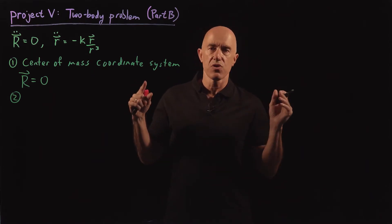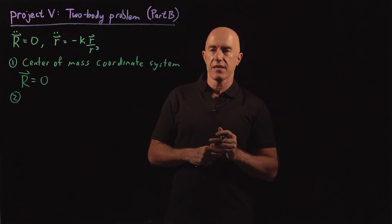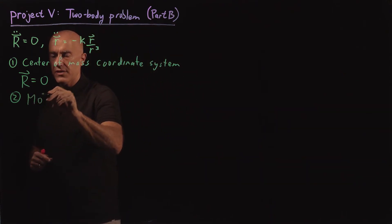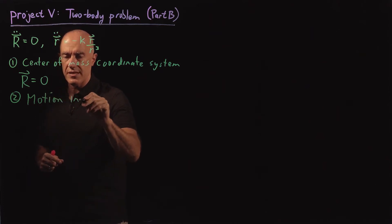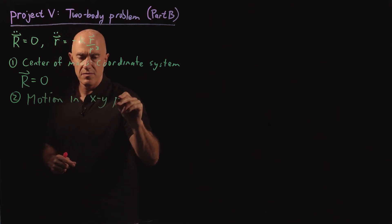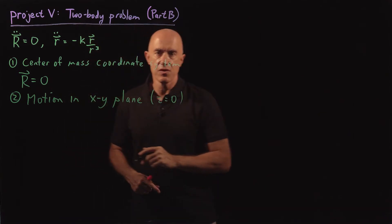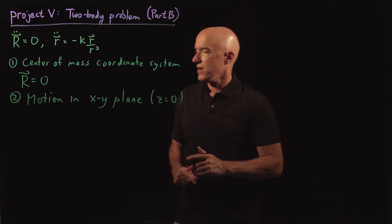Then the motion will always be in the xy plane. So here, we only need to consider two dimensional motion. So the motion in xy plane. So that means we're setting essentially z equal to zero.